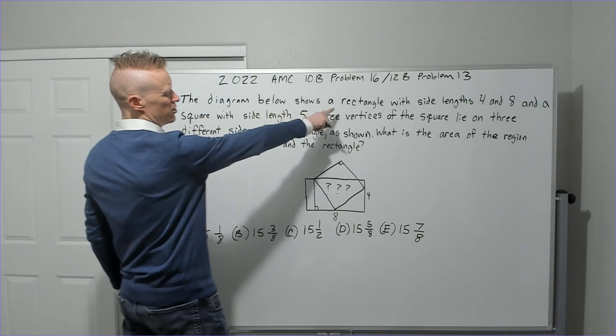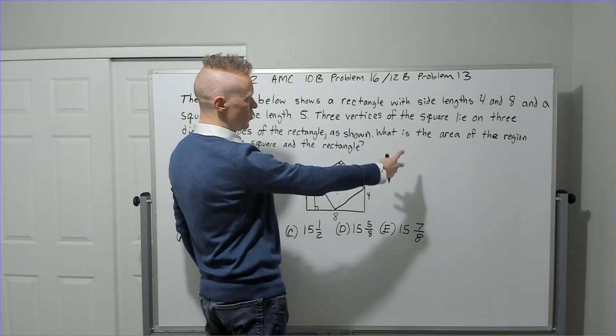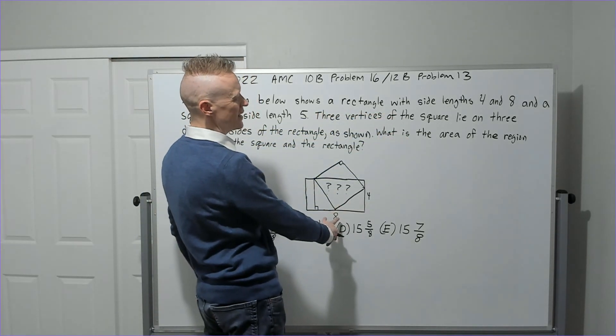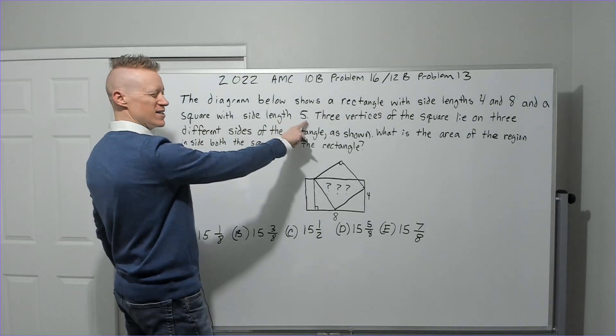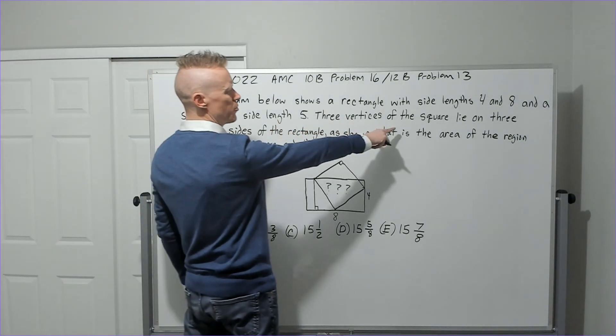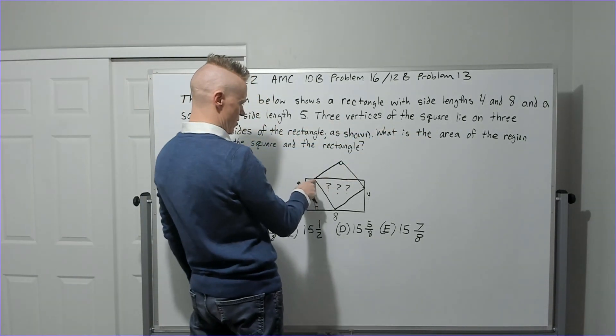The diagram below shows a rectangle with side lengths 4 and 8 and a square with side length 5. Three vertices of the square, 1, 2, 3, lie on three different sides of the rectangle as shown.